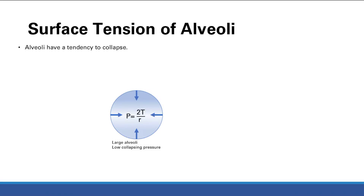Alveoli have a tendency to collapse. Why? Because alveoli are lined by fluid, and this fluid is attracted to each other — it wants to be as close as possible. So it's going to collapse in on itself and make as tight a sphere as possible.